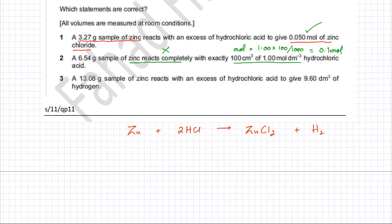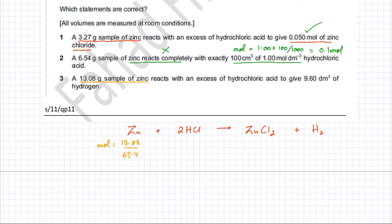Now we're going to check option number 3. When option 2 is incorrect, option 3 should also be incorrect, but we'll check it anyway. You have 13.08 grams of zinc. Finding the moles: 13.08 divided by 65.4 gives 0.2 moles. The question states this reacts with an excess of hydrochloric acid, meaning zinc reacts completely, and it should produce 9.6 dm³ of hydrogen. Let's verify that.